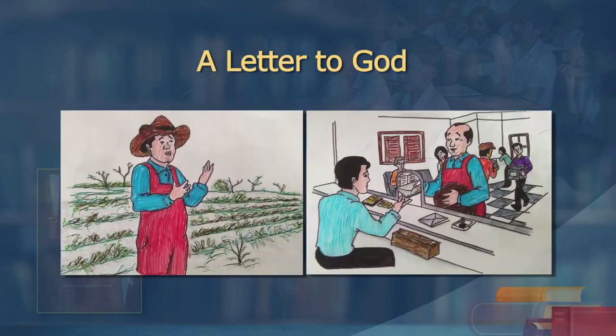Lencho was not at all surprised at receiving the letter, but instead he got angry on finding that the amount was less than expected. He wanted 100 pesos but got only 70. He wrote another letter to God conveying his distrust in the post office employees, whom he thought had stolen the balance amount, calling them a bunch of crooks. This is what Lencho is — we cannot blame him entirely. He had lost his crops, had nothing to eat, and his faith in God led him to write. The story is from Latin America, where the currency is Pesos.